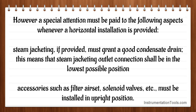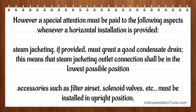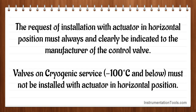However, special attention must be paid to the following aspects whenever a horizontal installation is provided. Steam jacketing, if provided, must grant a good condensate drain — the steam jacketing outlet connection shall be in the lowest possible position. Accessories such as filter, air set, solenoid valves, etc., must be installed in upright position. The request for installation with actuator in horizontal position must always be clearly indicated to the manufacturer of the control valve. Valves on cryogenic service — minus 100 degrees centigrade and below — must not be installed with the actuator in horizontal position.